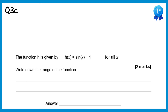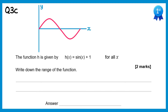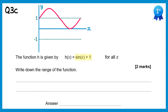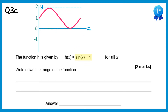To start this question I'm going to draw the graph of y equals sine x. It goes between negative 1 and positive 1. The function we've been asked about is sine of x plus 1, so we translate the graph one unit upwards. This new graph goes between 0 and 2. So the range is h(x) between 0 and 2, using less than or equal to signs since you can actually reach both 0 and 2.